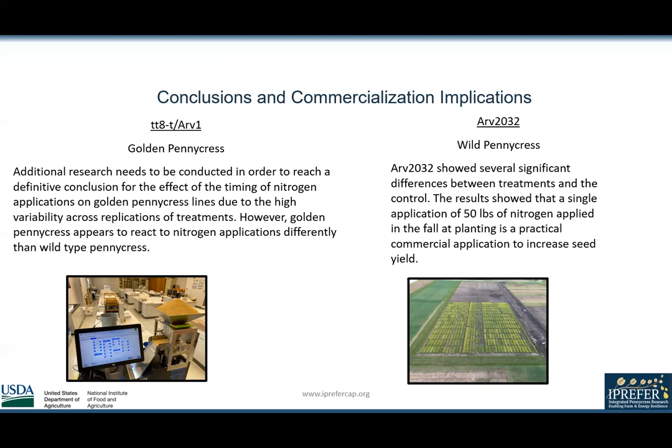However, it appears that golden Pennycress reacts differently to nitrogen applications than wild-type Pennycress. On the other hand, the results for ARV2032 show that a single application of 50 pounds of nitrogen applied in the fall prior to planting is an effective way to increase seed yield without applying excess nitrogen.